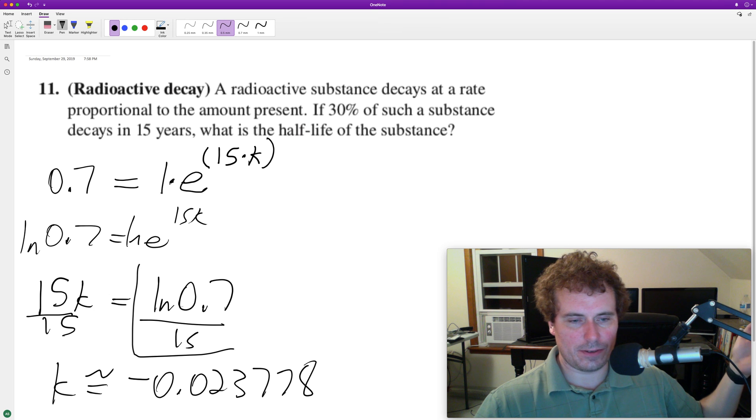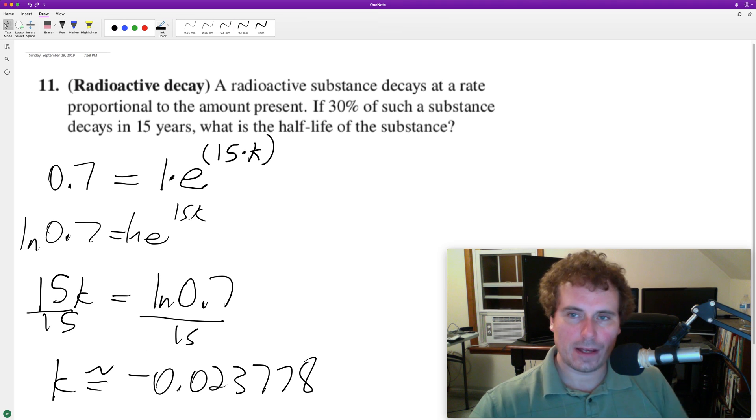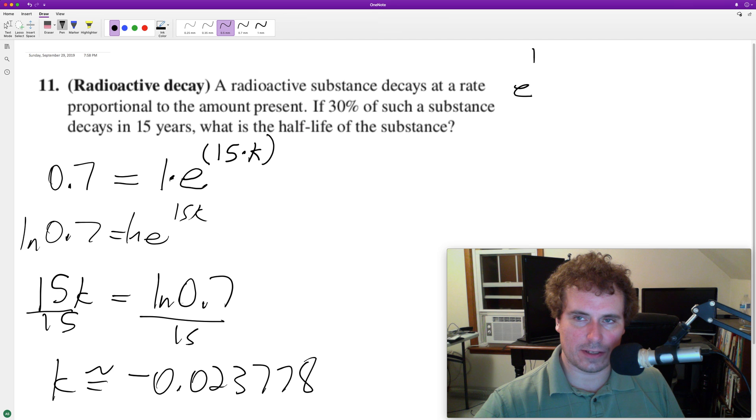It's essentially equal to this if you want to write it that way. And then what we do next is now that we know that, we set e raised to natural log of 0.7 divided by 15 times t.